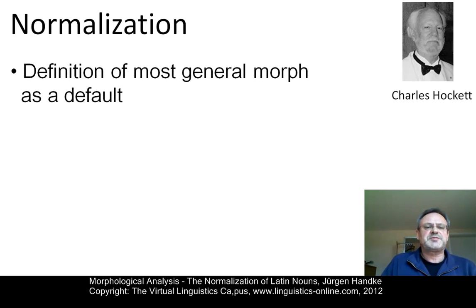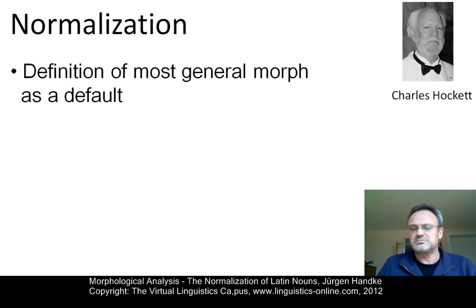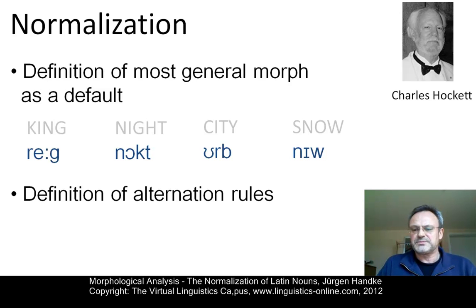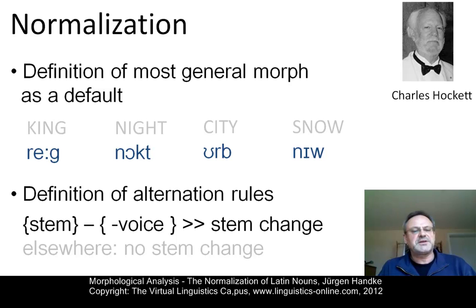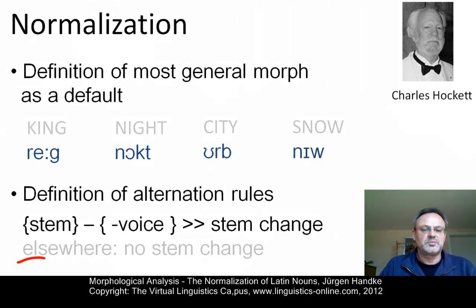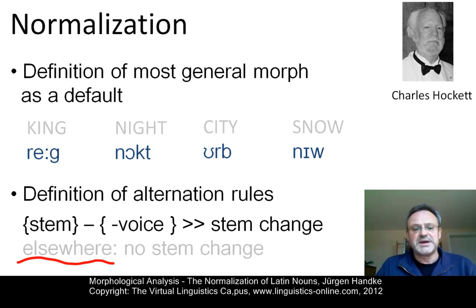What is normalization? We first define the most general morph of variants as a default. The most general ones are those occurring in the genitive, dative, accusative and ablative cases: reg, noct, urb and niu. Then we define alternation rules. In our case, we define a rule that says: as soon as one of these default normalized stems is followed by a suffix whose first element is voiceless, we have a stem change. Elsewhere, nothing will happen.